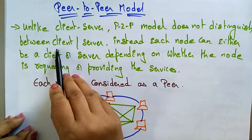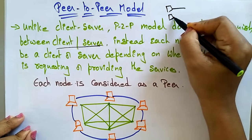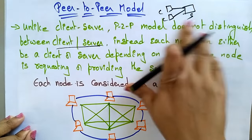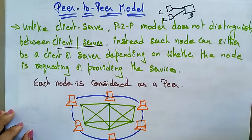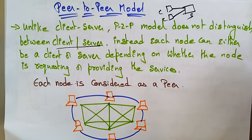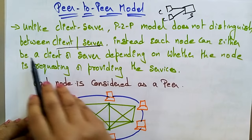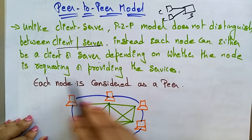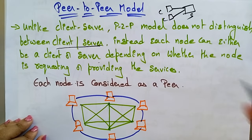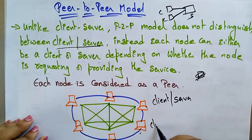Unlike the client-server model, the peer-to-peer model does not distinguish between client and server. In client-server, different client systems connect to one server. But in peer-to-peer, a node sometimes acts as a server and sometimes acts as a client based on the requirement. There is no fixed master or slave — each node can either be a client or server depending on whether it is requesting or providing the service.